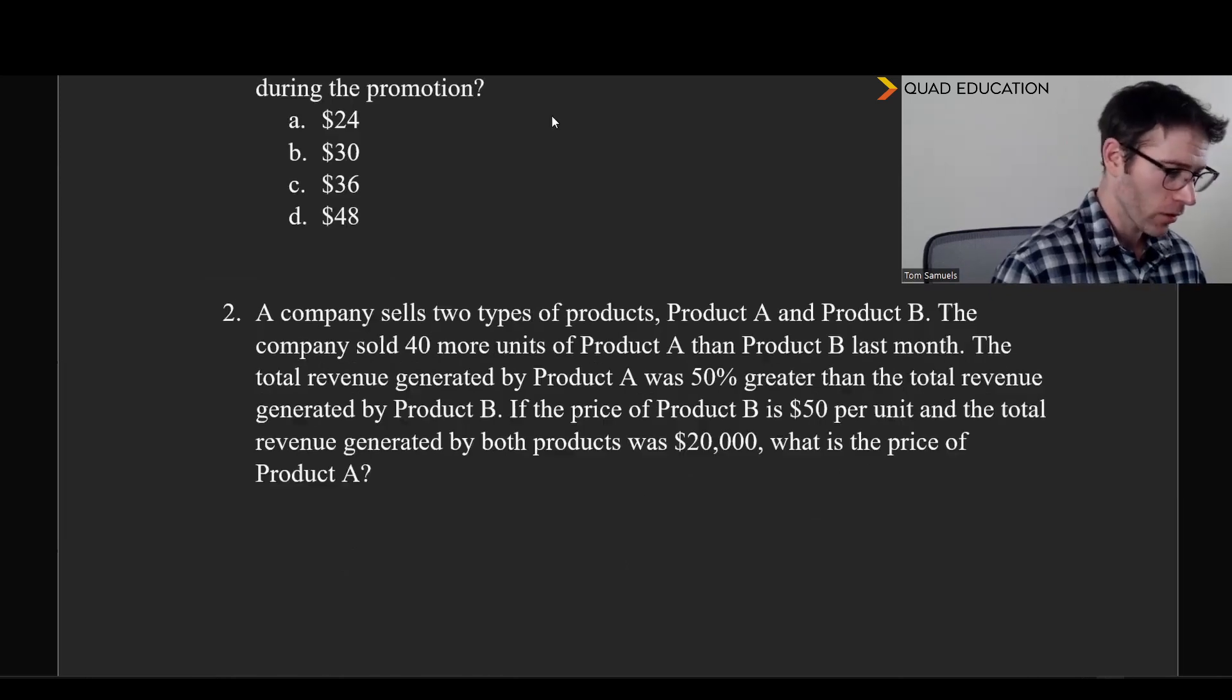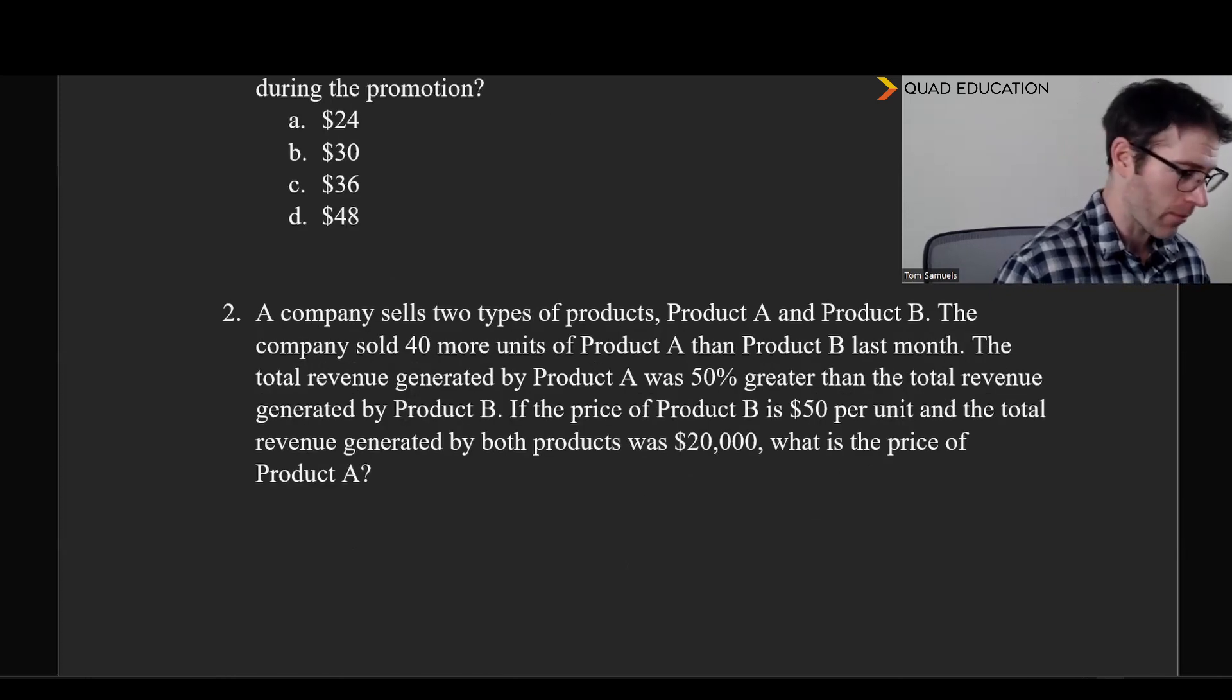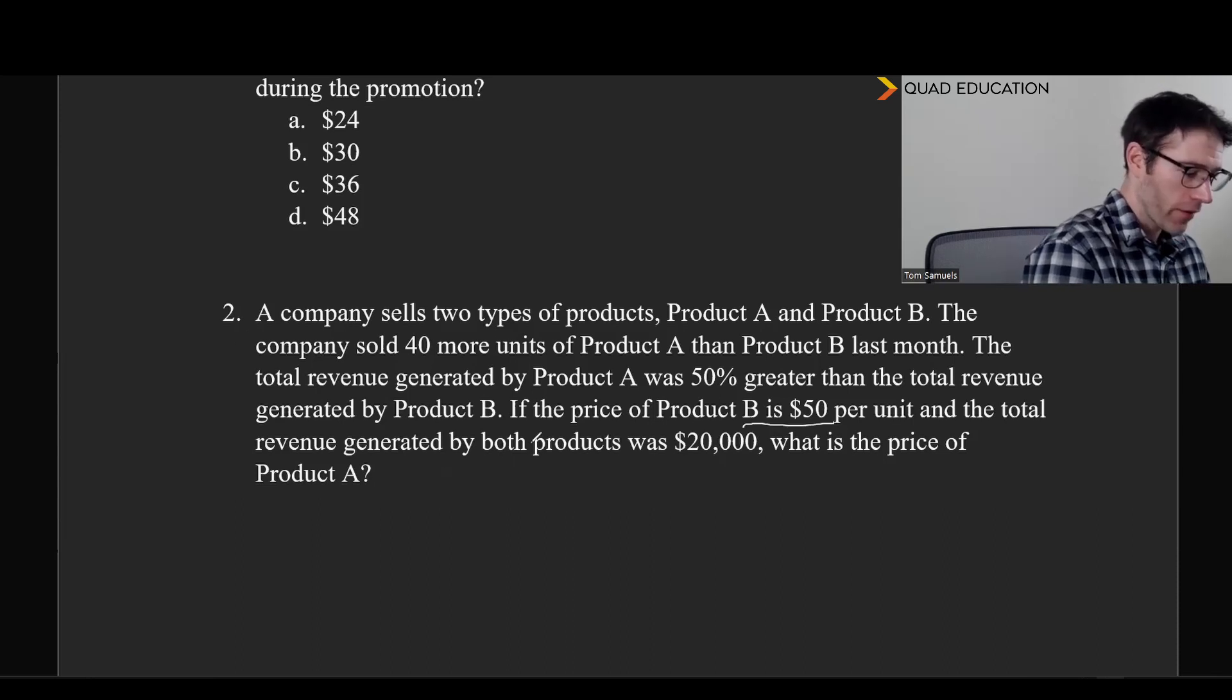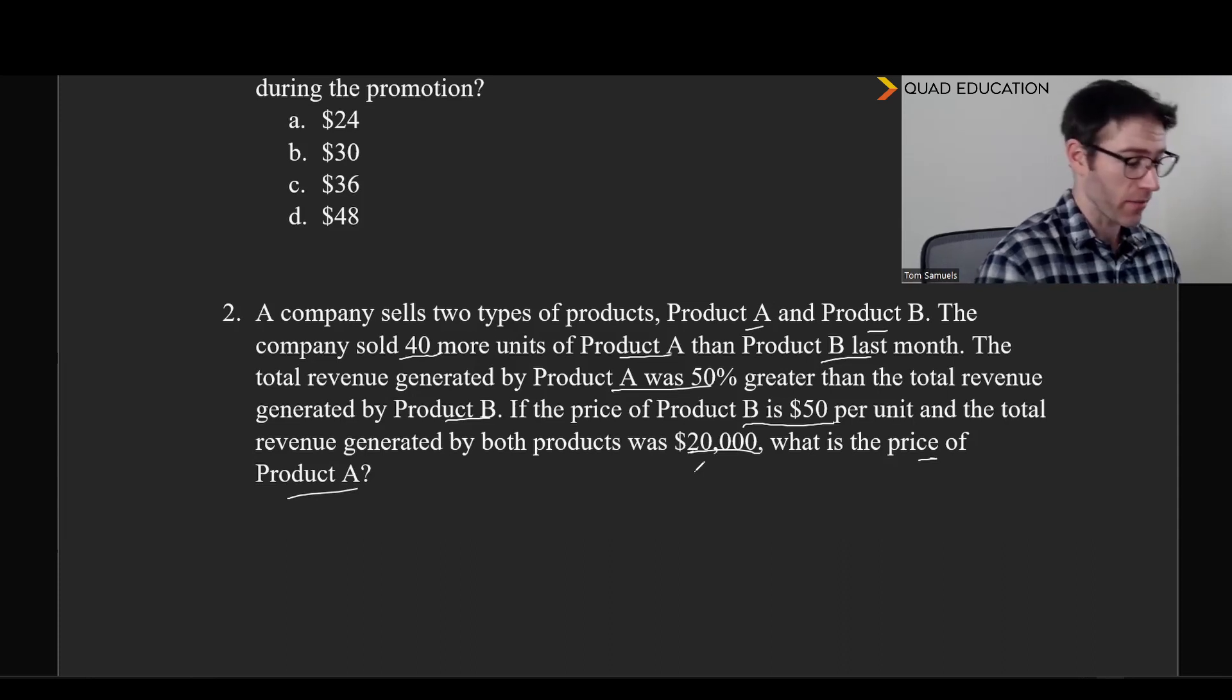Okay. Here's our next one. I went ahead and made this one free response. So, see what you can do. Okay. Let's take a look. So, looking to the end. If the price of product B is $50 per unit and the total revenue generated by both products was $20,000, what is the price of product A? So, they say a company sells two types of products, product A and product B. The company sold 40 more units of product A than product B last month. The total revenue generated by product A was 50% greater than the total revenue generated by product B. If the price of product B is $50 per unit and the total revenue for both is $20,000, what's the price? So, we've got a whole lot of stuff going on here.